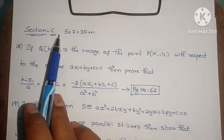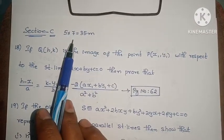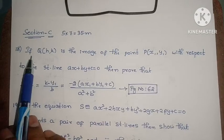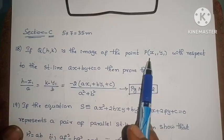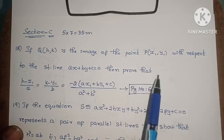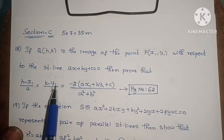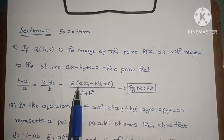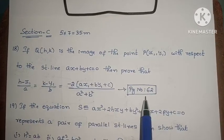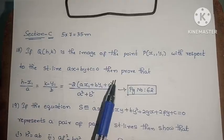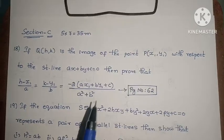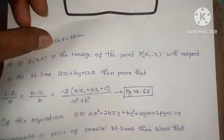If Q (h, k) is the image of the point P (x1, y1) with respect to the straight line ax plus by plus c equals 0, then prove that h minus x1 over a equals k minus y1 over b equals minus 2 times (ax1 plus by1 plus c) divided by a squared plus b squared. Page number 62. This is the image theorem.